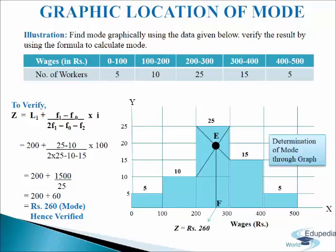Now we will draw two lines: one joining the top right point of the preceding rectangle — class interval 100 to 200 — to the top right point of the modal class. The next line joins the top left point of the modal class with the top left point of the post-modal class, which comes under 300 to 400, as you can see in the graph. We get a point of intersection, that is point E. From point E we draw a perpendicular on the horizontal axis X, and we get point F. F is the value of mode.